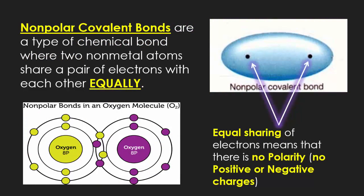Nonpolar covalent bonds are a type of chemical bond where two nonmetal atoms share a pair of electrons with each other equally. Equal sharing of electrons means there is no polarity, so no positive or negative charges because there's equal distribution of electrical charge. One of the main types of nonpolar covalent bonds will always be found in your diatomic molecules: hydrogen, oxygen, fluorine, chlorine, nitrogen, bromine, and iodine. Those seven make up all the nonpolar covalent bonds that are naturally found.